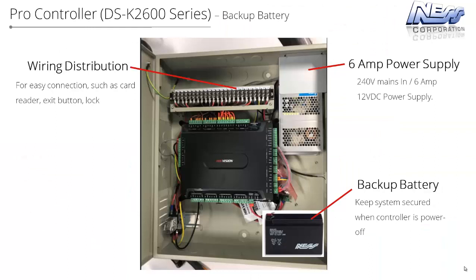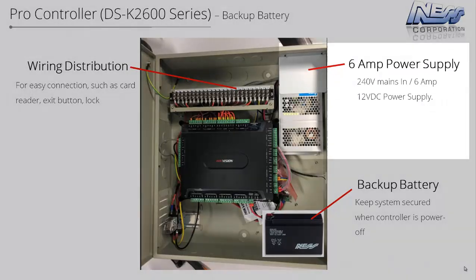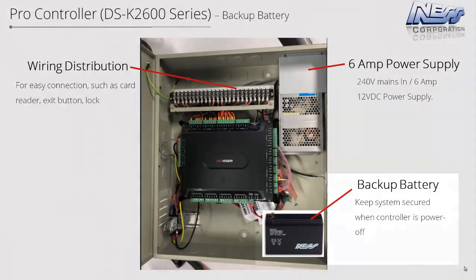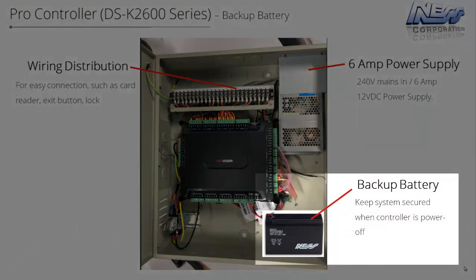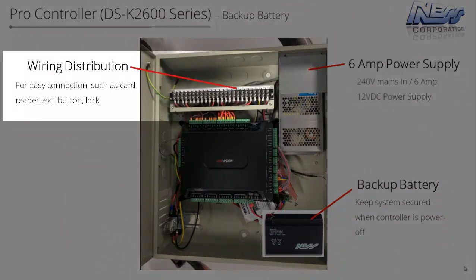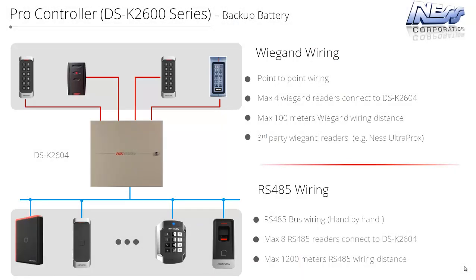It is a true standalone high-security controller that always makes a decision if communication is lost to the front-end computer. It is supplied in a lockable metal cabinet with a 6-amp power supply large enough to power the controller as well as up to 4 magnetic locks. There is also a backup battery monitored for voltage and current. To make installation easy, there is a wiring distribution terminal, so installers just bring in card readers, exit buttons, locks, etc. directly to this terminal base without dealing with small connectors on the main board.